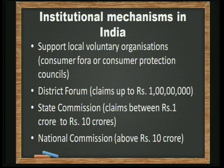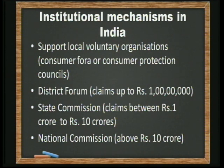The second forum is the state commission — the state level. If you are not satisfied with the district forum verdict, or if the district judge says your documents are insufficient, you can appeal to the state level commission. For compensation from 1 crore to 10 crore rupees, you can go to the state commission. If it is beyond 10 crore rupees, you can go to the national commission. These are four kinds of organizational systems established under the Consumer Protection Act.